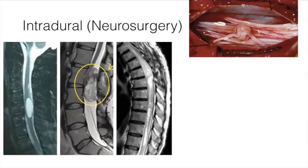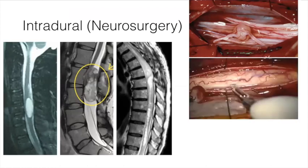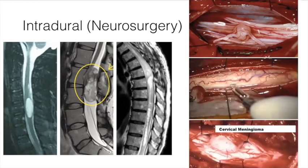These intraoperative photos show examples. This is a schwannoma on one of the nerve roots — the dura has been intentionally opened and held by silk sutures. Another photo shows a knife cutting open the spinal cord to access an intramedullary astrocytoma. A cervical meningioma is also shown, sitting between the dura and pressing on the spinal cord. These are not tumors you'll encounter surgically in this context.